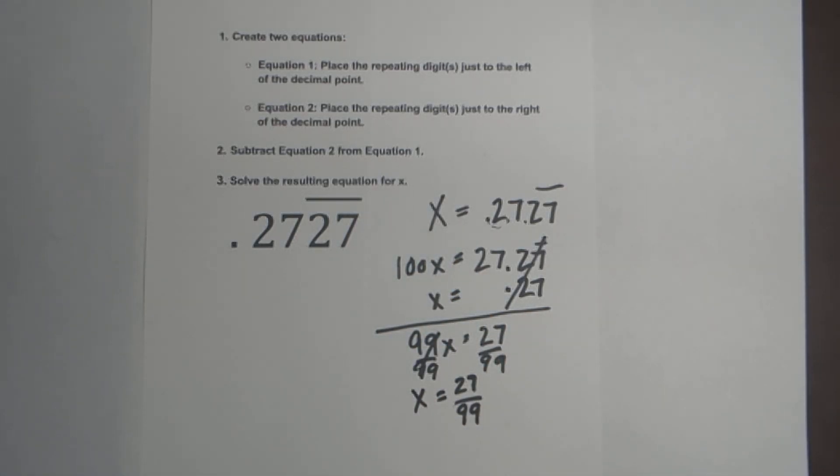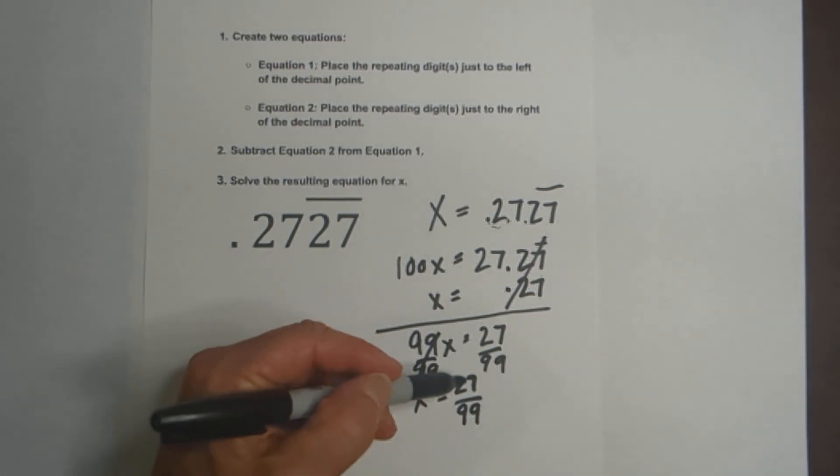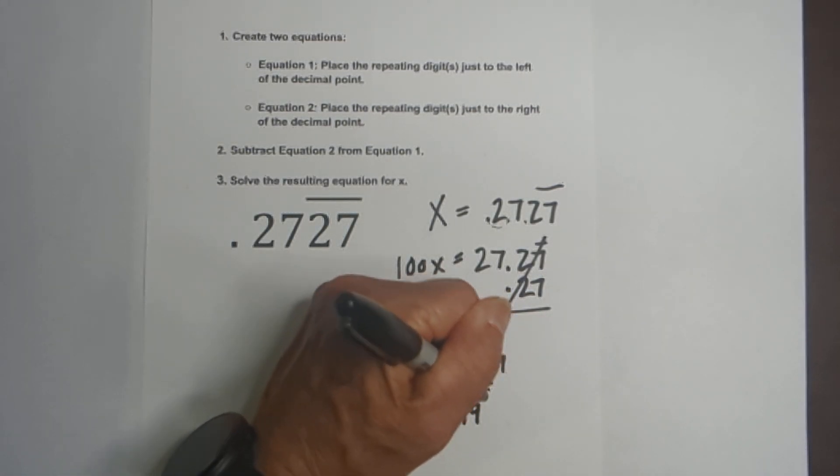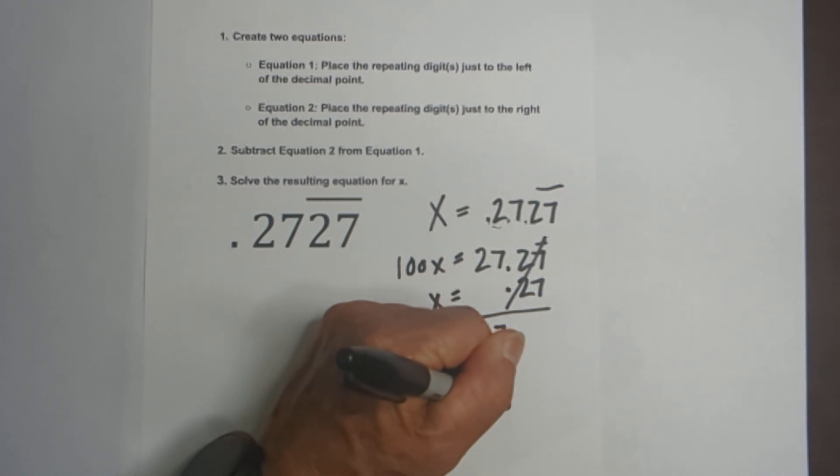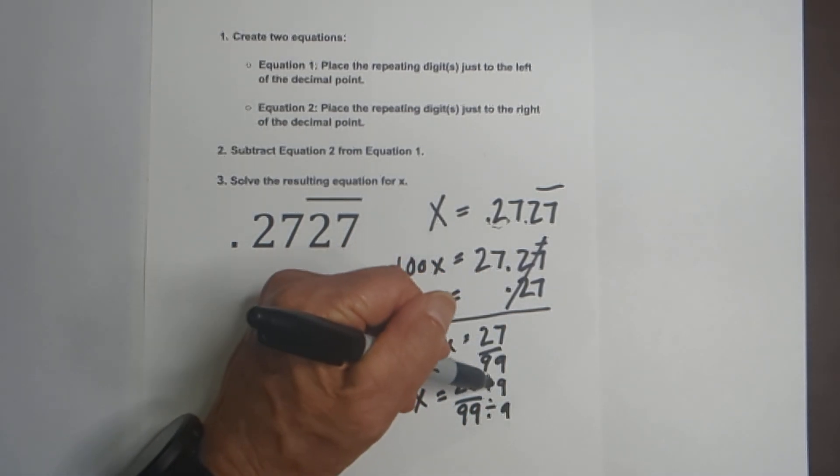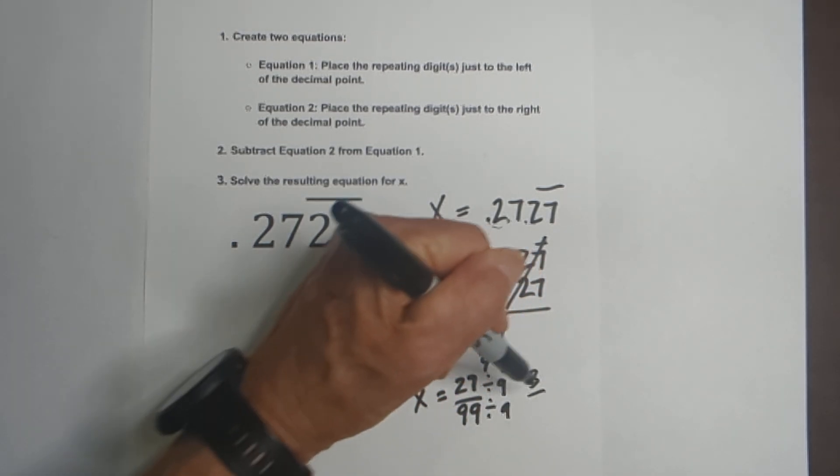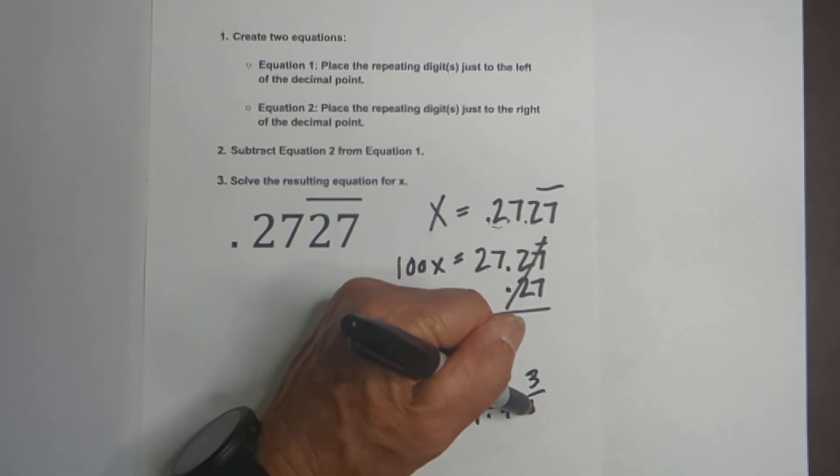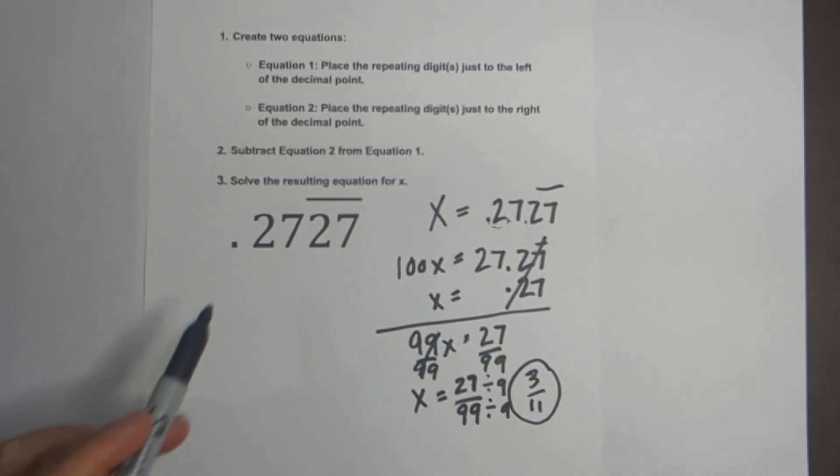Now we can further reduce this because they're both divisible by 9. And when we do that, 27 divided by 9 is 3 and 99 divided by 9 is 11. So 0.2727 repeating as a fraction is 3 elevenths.